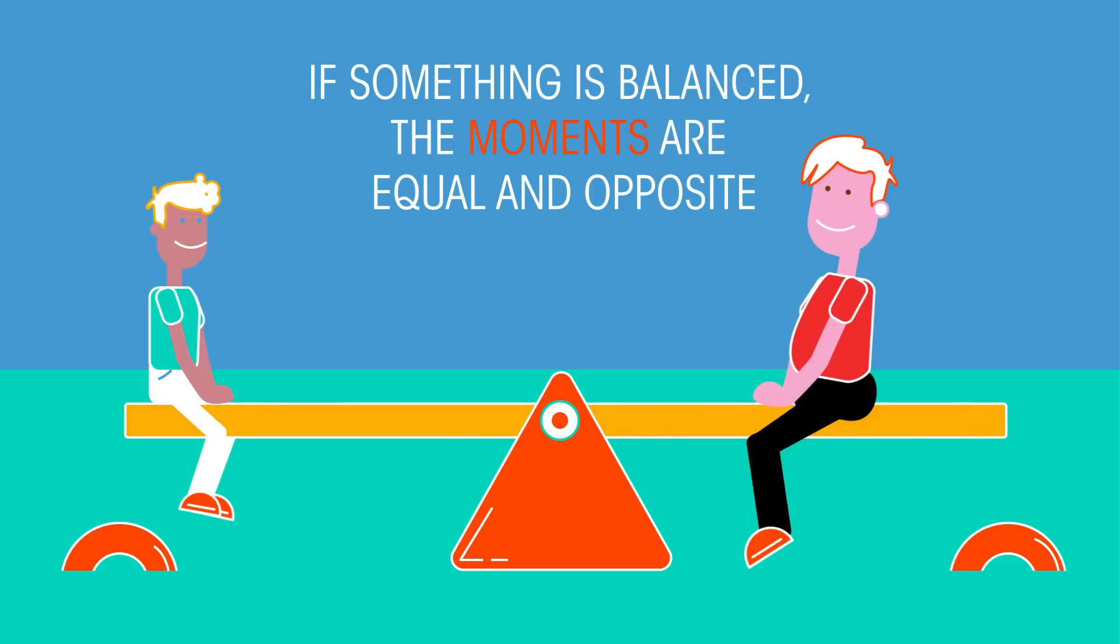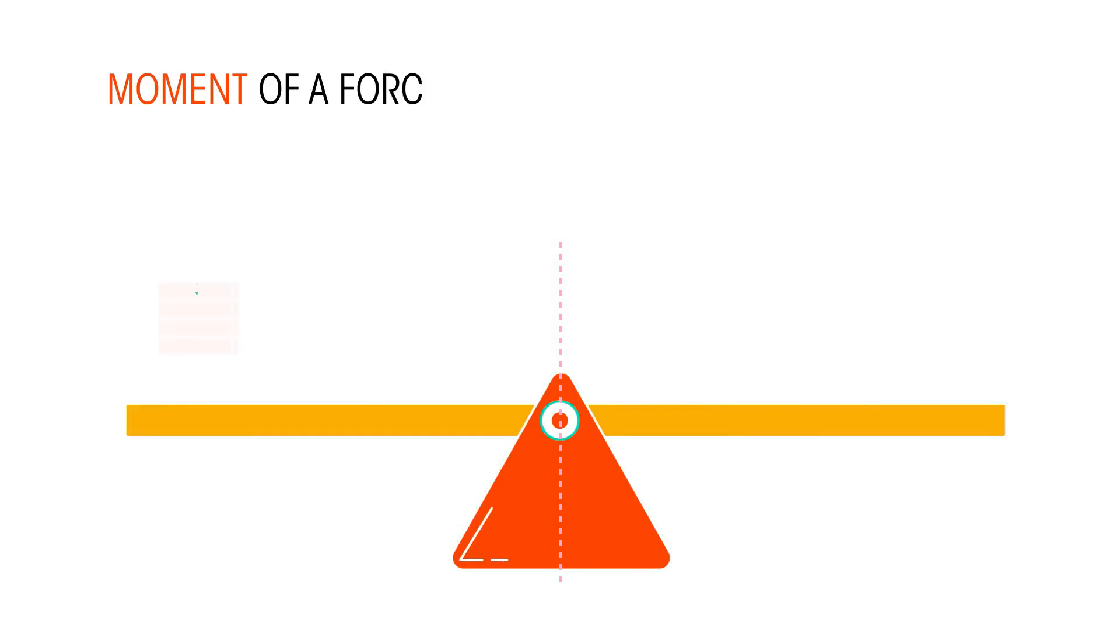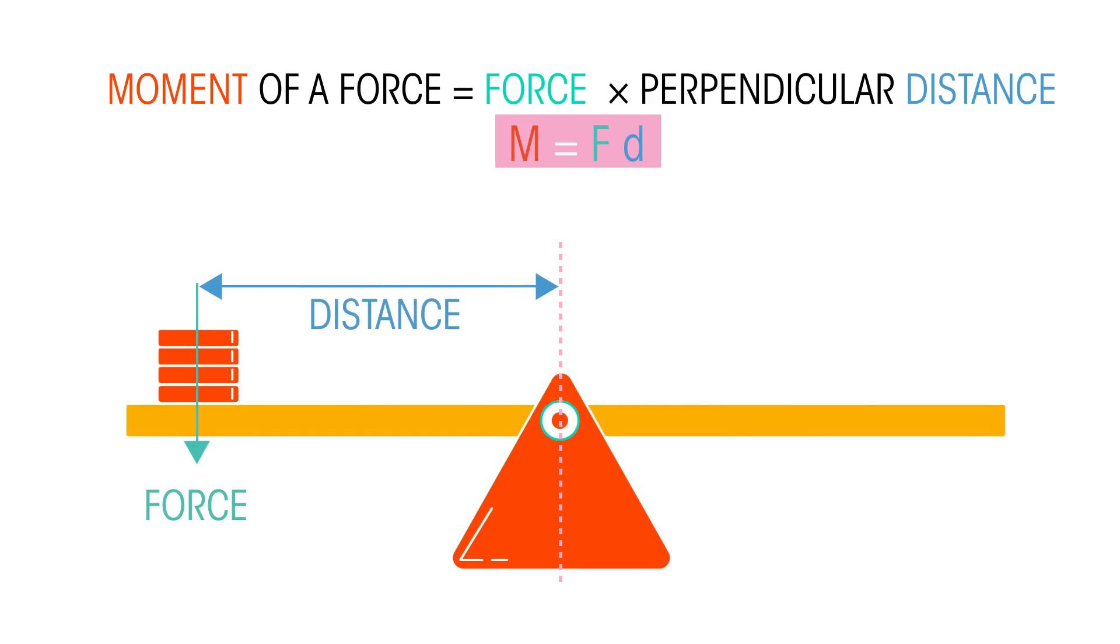To be balanced, this lighter child needs to sit further away from the pivot, and the heavier child needs to be closer. This is because the size of a moment is determined by the force and a distance.